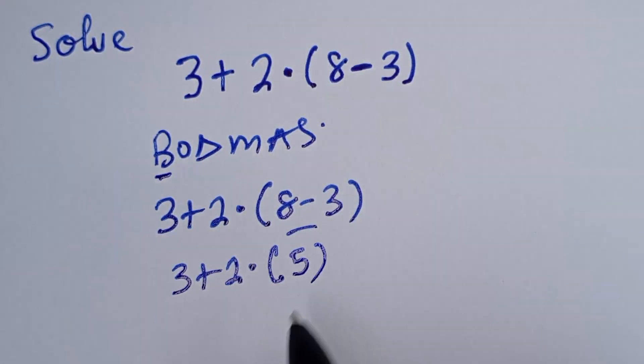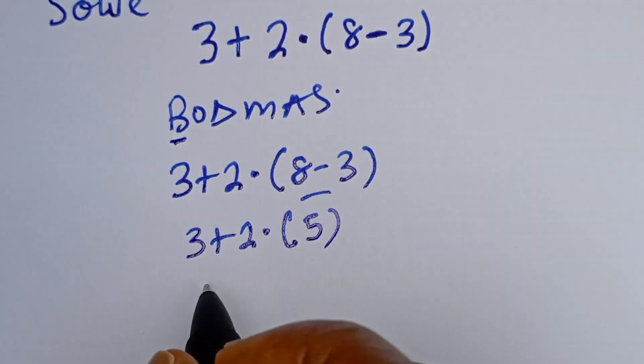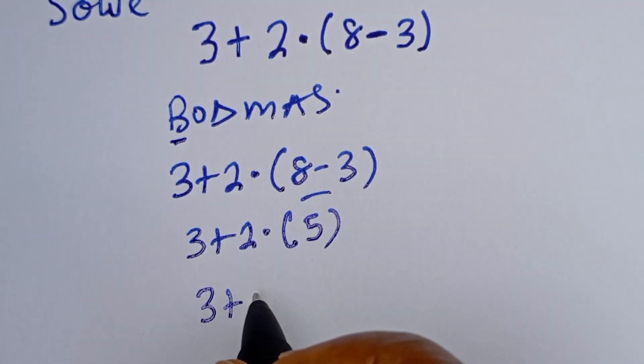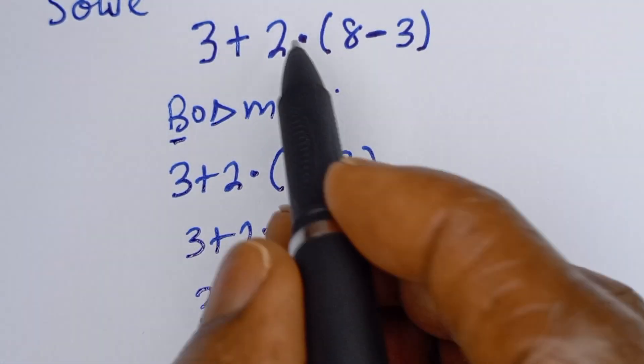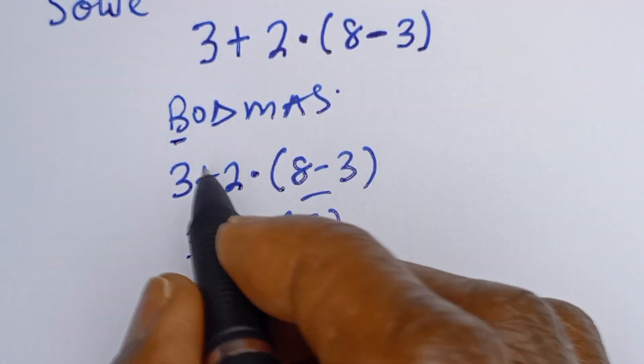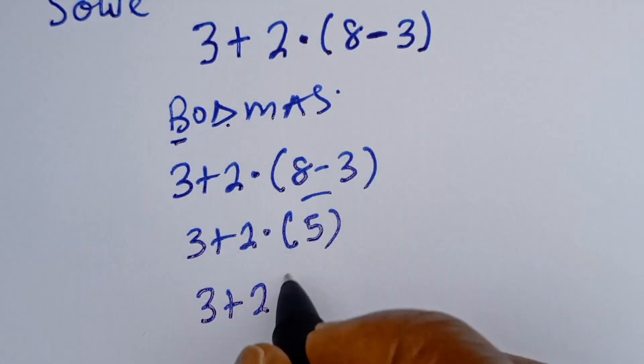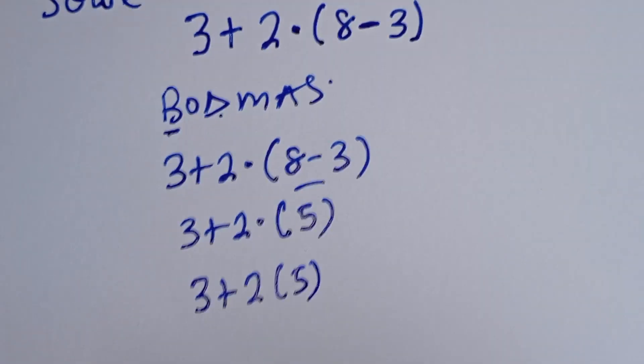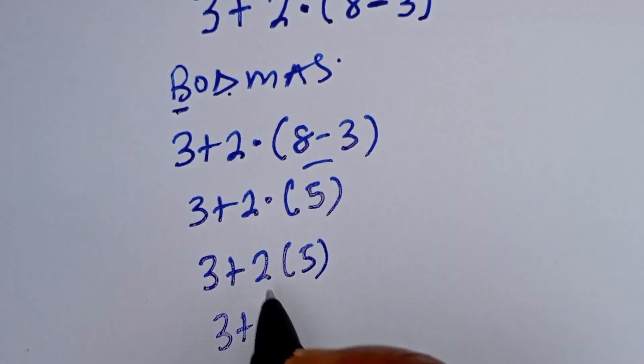Then this is 3 plus 2 times 5. According to BODMAS, we handle multiplication next, so 2 times 5 equals 10.